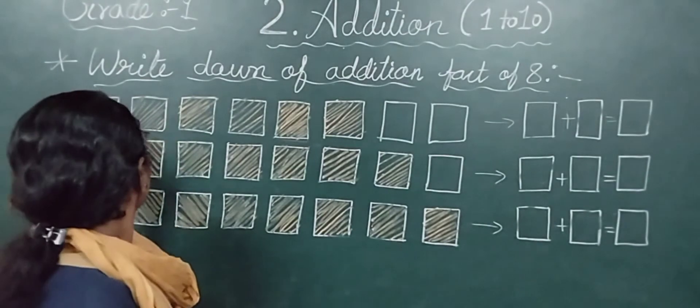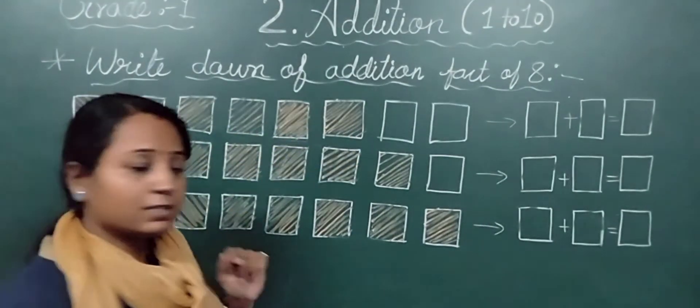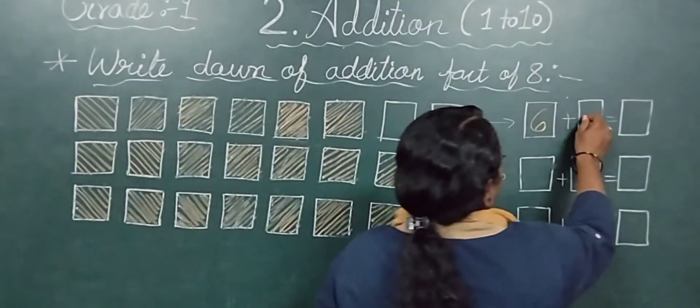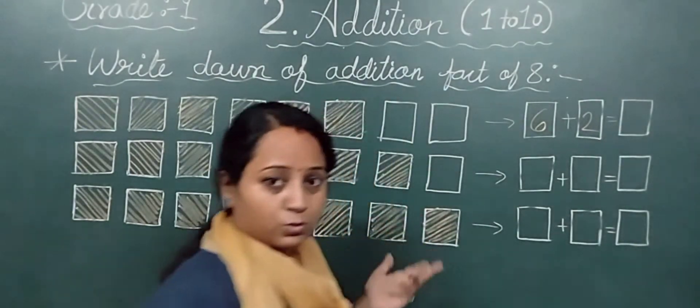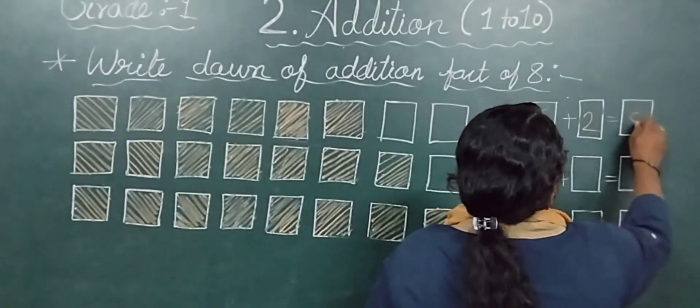I am going to count here: 1, 2, 3, 4, 5, 6. Six are colored. And plain is 2. So 6 plus 2: 6, 7, 8. Answer is 8.